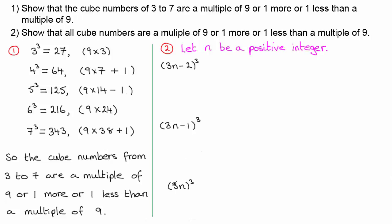Starting with (3n)³: this is straightforward because (3n)³ equals 27n³, which is 9 × 3n³. Because we've got a common factor of nine, and 3n³ is a positive integer when n is a positive integer, this is a multiple of nine.